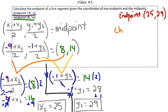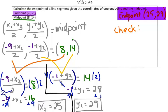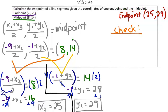As a check, we're going to go ahead and substitute this endpoint with the original endpoint into our midpoint formula to see do we get the midpoint ordered pair to be 8, 14. Going ahead and substituting, we've got negative 9 plus 25 divided by 2 for the x coordinate. And we've got negative 1 plus 29 divided by 2 for our y coordinate.